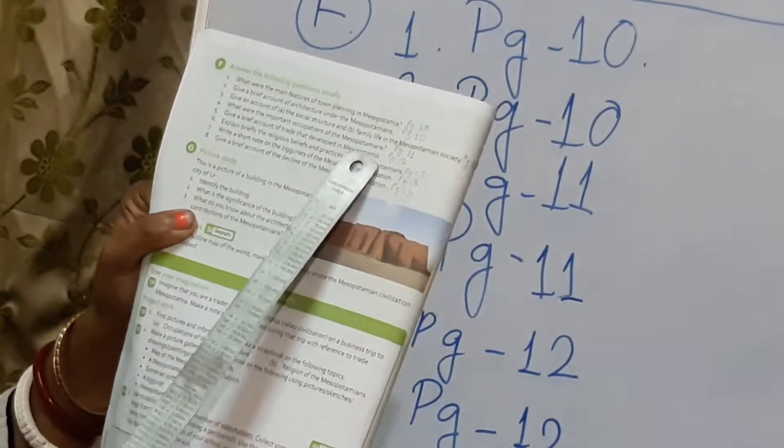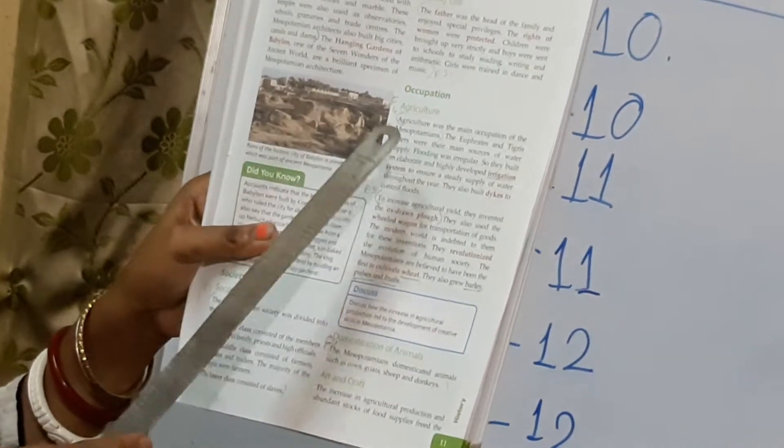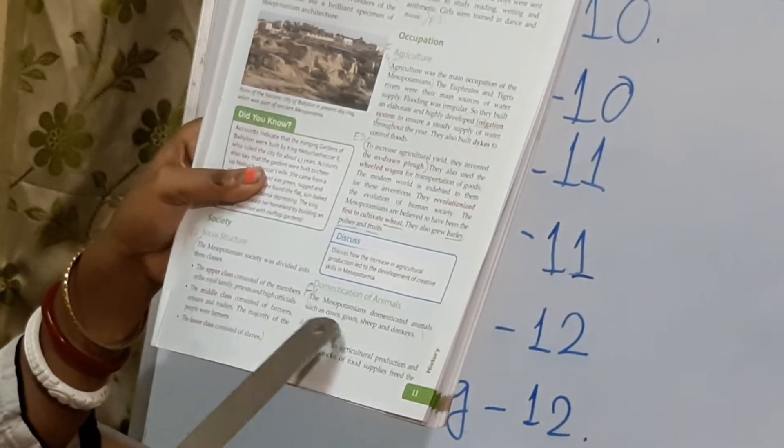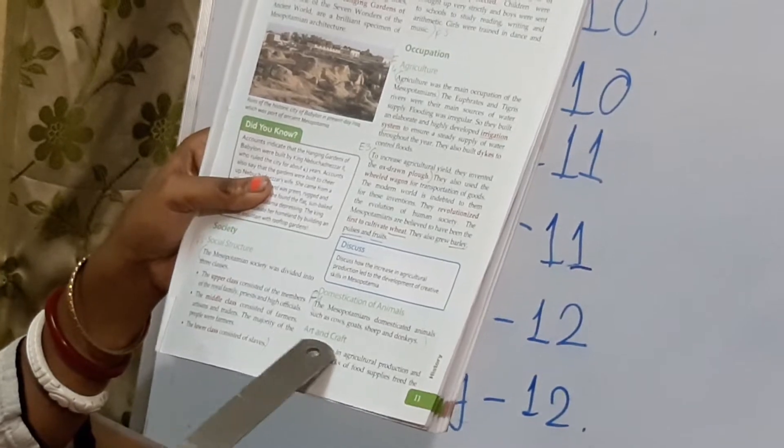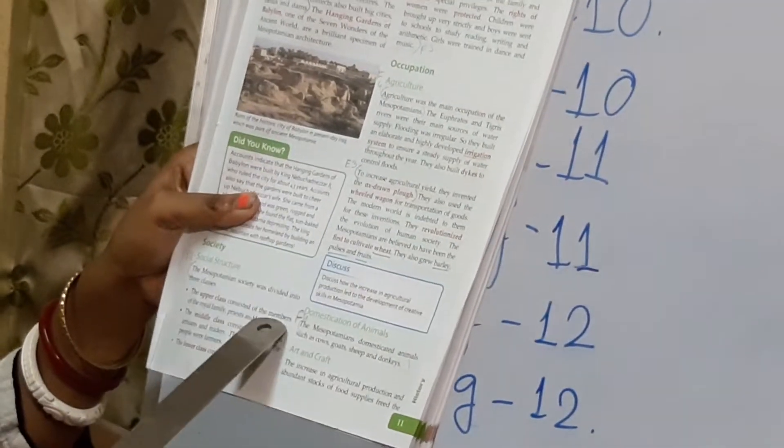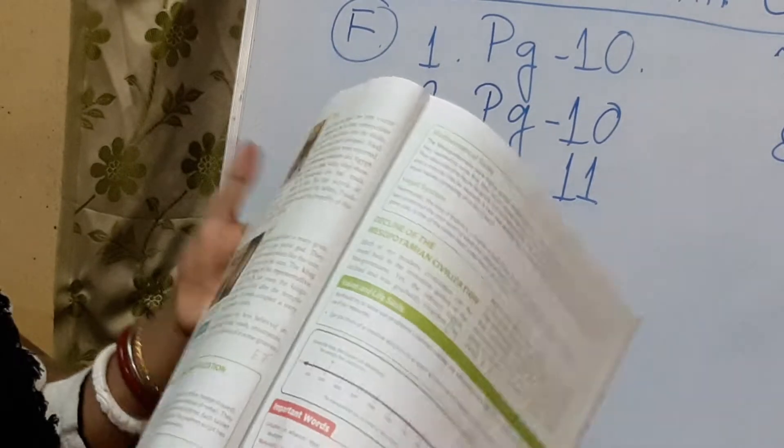So look again. I am showing you the answer. Page number is 11. Take out page number 11. So here you see after family life, this occupation place is there under the heading of occupation. Only you will write agriculture was the main occupation of the Mesopotamians. Then after writing that you will also write that Mesopotamians domesticated animals such as cows, goats, sheep and donkeys. And with that you can add that arts and crafts is also another occupation.